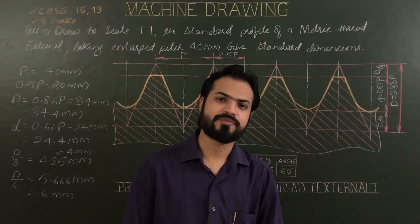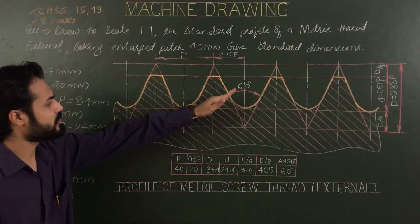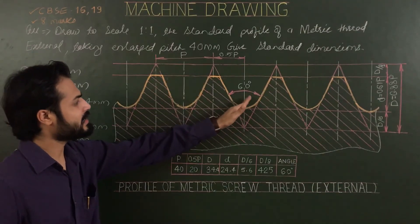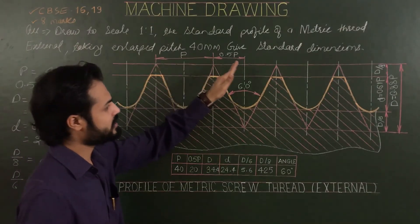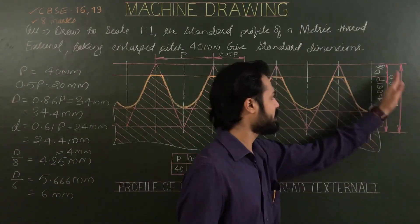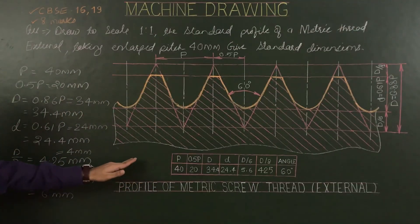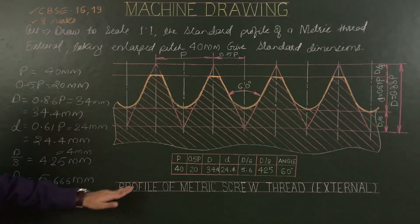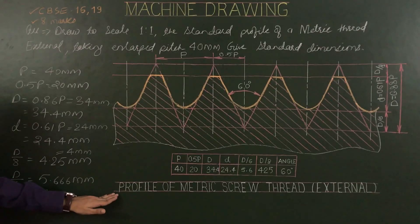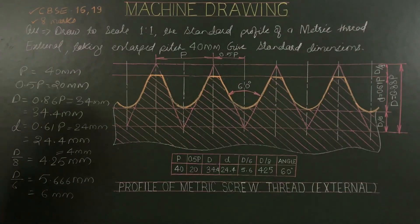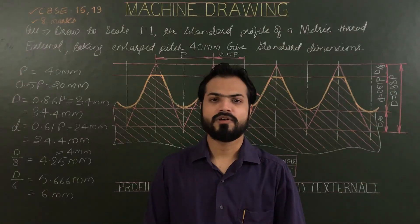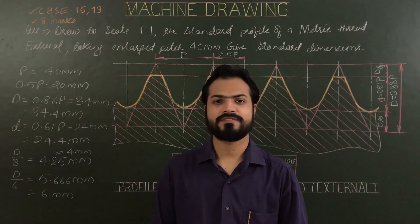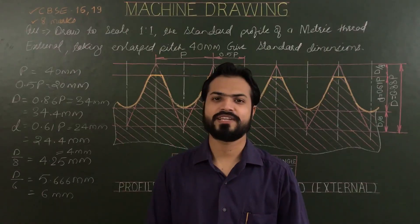This is the final answer — the profile of metric thread. Please draw this problem on your sheet. Indicate the angle between flanks as 60 degrees, pitch, and half of pitch. Show all dimensions in terms of P, write all related dimensions in the table, and in the last step write the name of the profile: Profile of Metric Screw Thread External. If you have any doubt about this thread profile or any topic in engineering graphics, please write your comments in the comment section. Thank you.